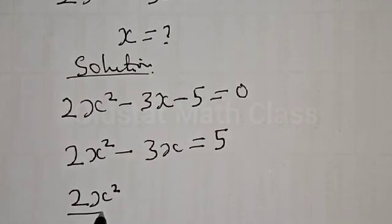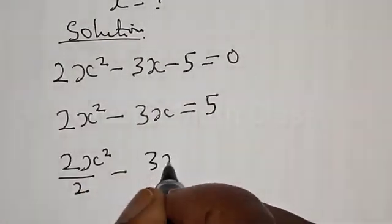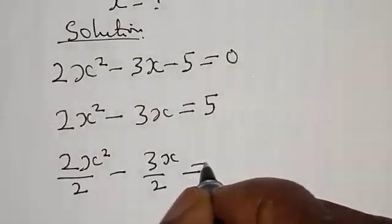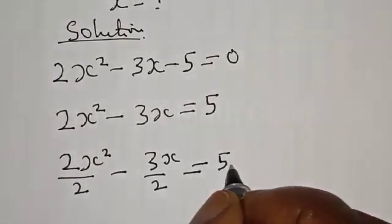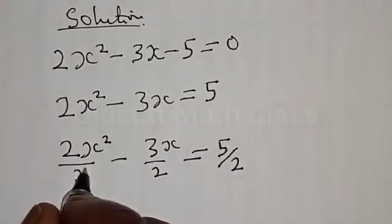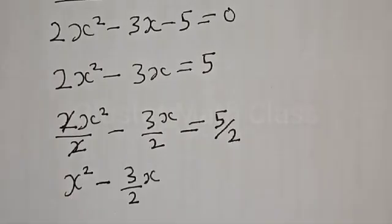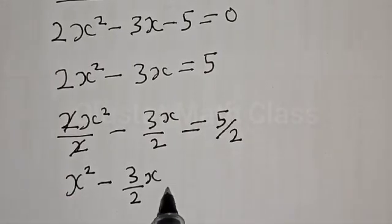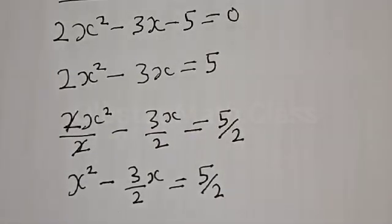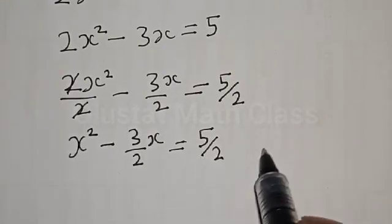Now let's divide both sides by the coefficient of s², which is 2. We have 2s²/2 - 3s/2 = 5/2. The 2s²/2 cancels to give s² - 3s/2 = 5/2.